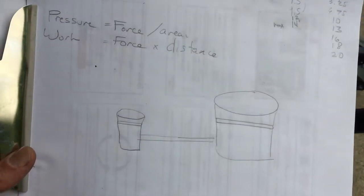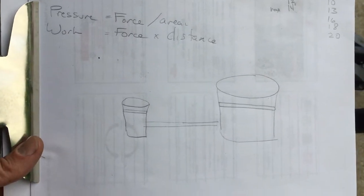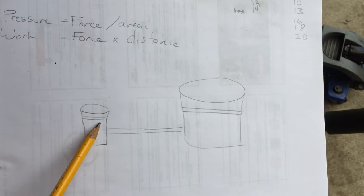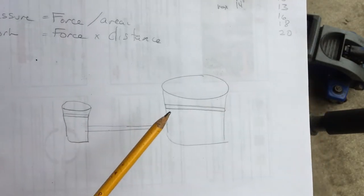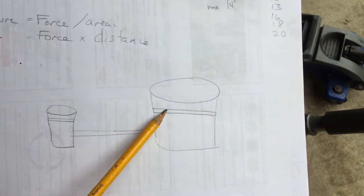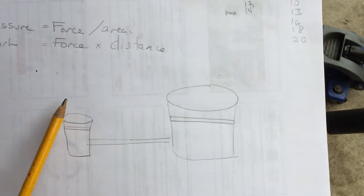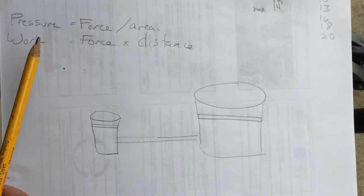So basically you have two cylinders. You're pumping on the small cylinder here and you're pushing the car under the larger cylinder. There's a fluid in between the two, and because the pressure is constant...